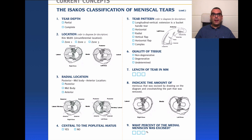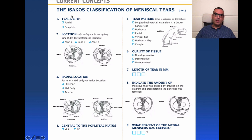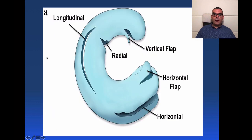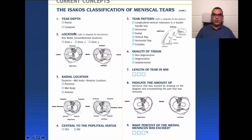When you describe a meniscal tear, it is not enough to simply state 'horizontal tear at the posterior medial meniscus.' You must describe very important variations. First, comment on tear depth: is it a partial depth tear or a complete thickness tear? For vertical tears, is it interrupting one surface — superior or inferior — or coursing from superior to inferior surface? That is the tear depth, applicable for vertical tears.